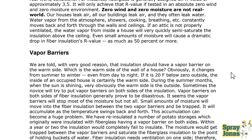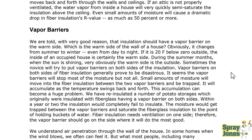We're told that insulation should have a vapor barrier on the warm side of the wall, which obviously changes from summer to winter, even day or night. If it's 20 degrees Fahrenheit below zero outside with the sun shining, the warm side is clearly the outside. Sometimes the novice will try to put vapor barriers on both sides of the insulation. Vapor barriers on both sides of fiber generally prove to be disastrous — the vapor barriers will stop most of the moisture but not all, since we're punching them full of holes, and this accumulation can become a huge problem.